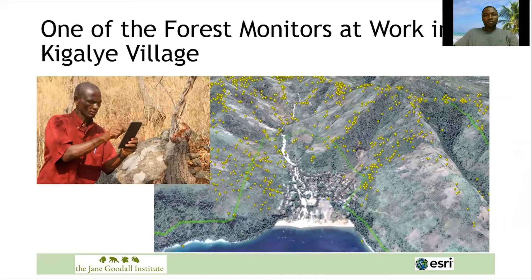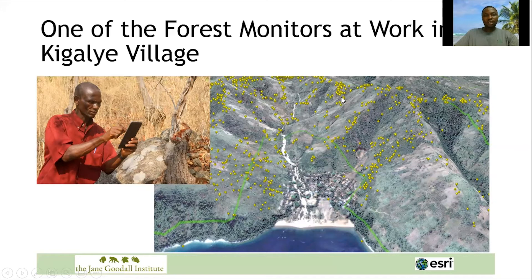Here is one of the forest monitors in Kigale village at work, using his smartphone to go into the forest. On the high-resolution satellite image, the yellow points show locations where the forest monitor has been collecting information about wildlife threats, chimpanzee observations such as nests, chimp calls, and droppings. This information is delivered to village authorities as well as uploaded to ArcGIS Online, and shared with decision makers at the district level via the ArcGIS Online platform.